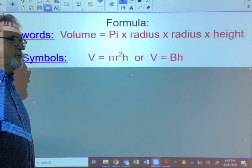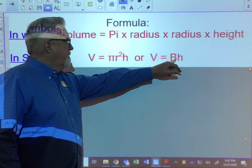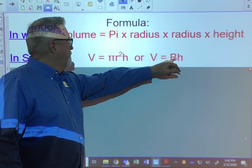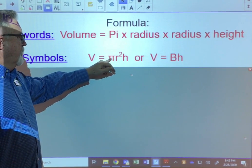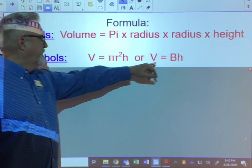The capital B here actually stands for the area of the base, which is the area of a circle. So here's why we have pi r squared in place of the capital B.